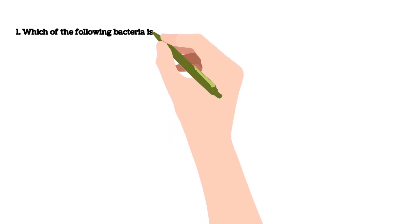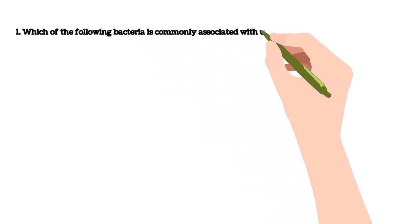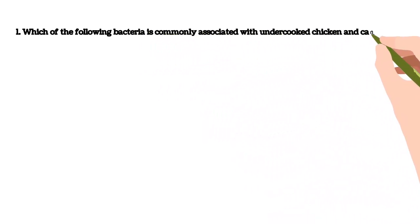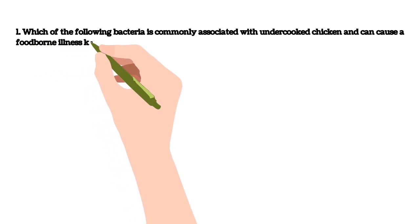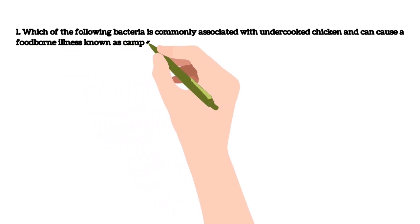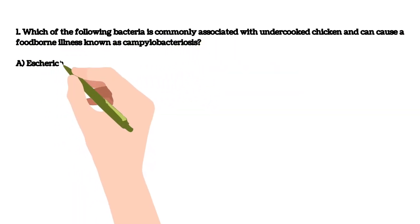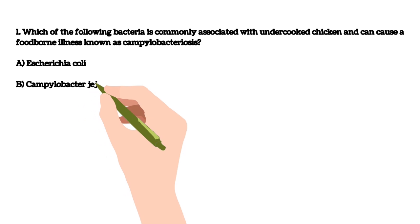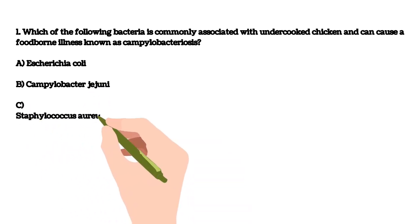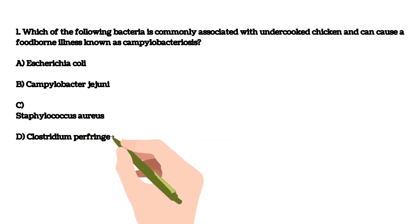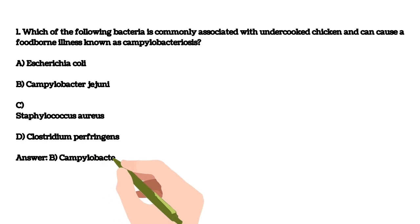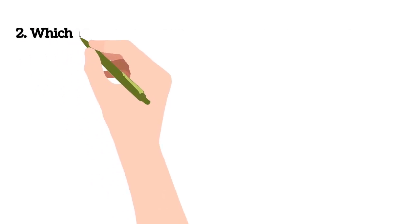Welcome to Biology Tutor. If you like this channel, please share and subscribe — don't forget to click the bell button to get notifications. First question: which of the following bacteria is commonly associated with undercooked chicken and can cause a foodborne illness known as campylobacteriosis? A) E. coli, B) Campylobacter jejuni, C) Staphylococcus aureus, D) Clostridium perfringens. Your answer is B) Campylobacter jejuni.